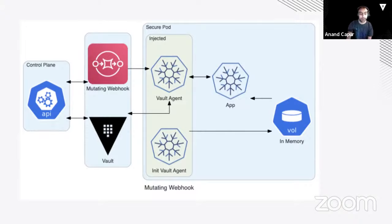Once the Vault agent has your secrets, it renders them out to a file, which is then shared from the sidecar container into the container running your application using an in-memory volume. So your secrets are only stored in memory — not persisted to disk — but your app is able to access them. There's also an init Vault agent: when you deploy your application, the Vault agent runs first, grabs your secrets, and publishes them to that in-memory volume so your app has all its secrets available when it boots. After that, the Vault agent keeps running as a daemon in the sidecar to update your secrets.